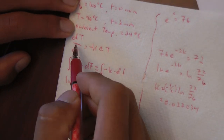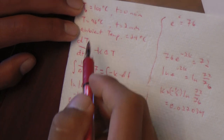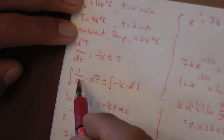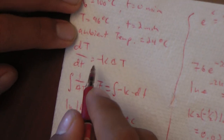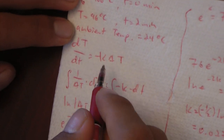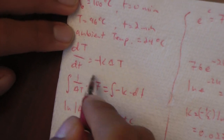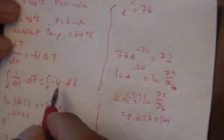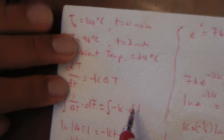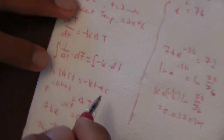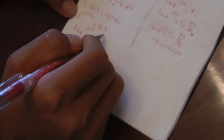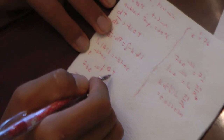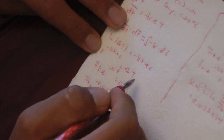It states that the change in temperature with respect to time is equal to negative k times (T minus T_ambient). k is a constant. After separating the variables and integrating both sides, we get to this expression. Now we just need to find k and C.